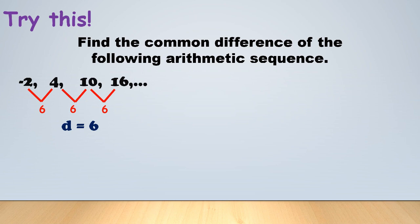If you're sure the given is an arithmetic sequence, you don't have to subtract all consecutive terms. You can just pick one pair and subtract — for this one, 10 minus 4 or 16 minus 10 both give 6.